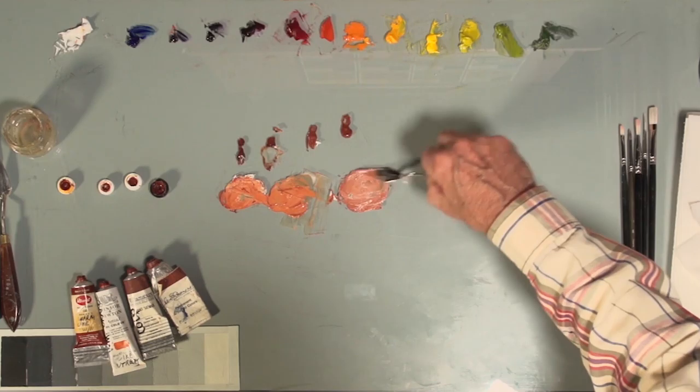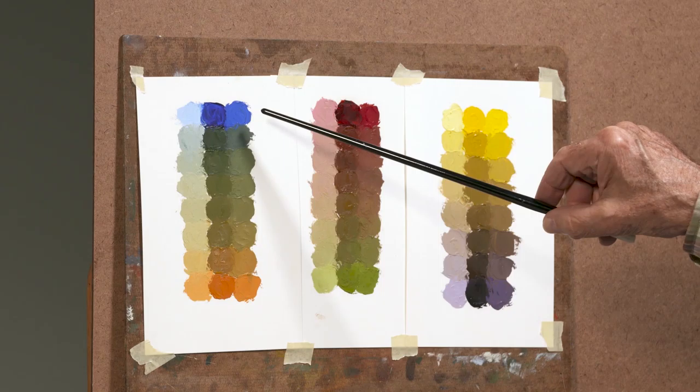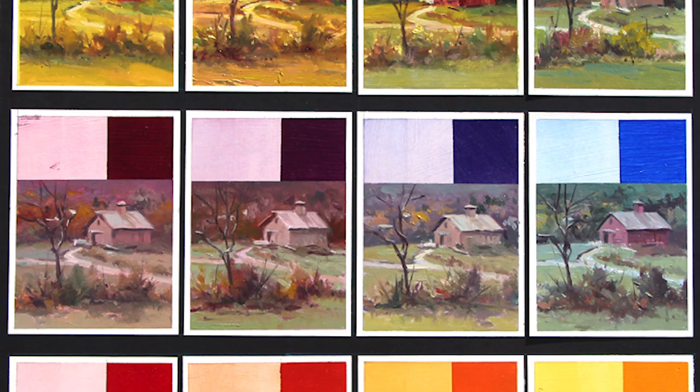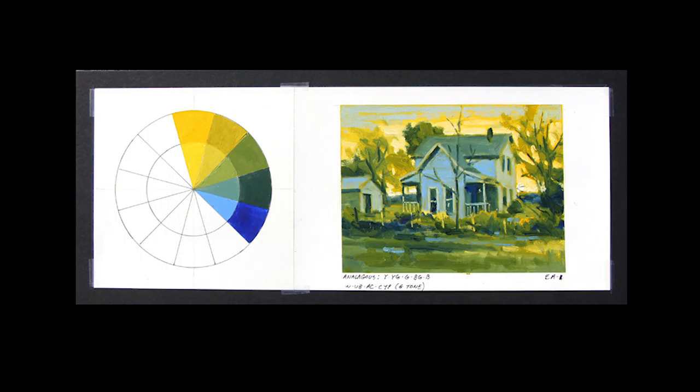Let John be your guide as he shows you how to mix pure, clean color, modify color, and expand your color options nearly to infinity by using just three primary colors plus white. He'll take you even further by showing you the same scene using multiple color wheels and palettes so you can see for yourself how the primary colors you choose can completely change the look of the painting.